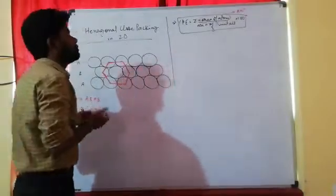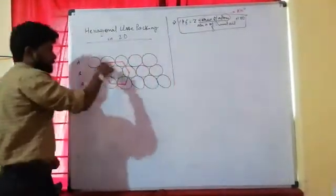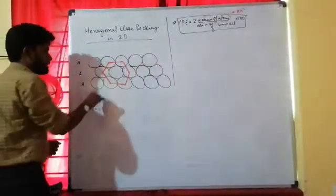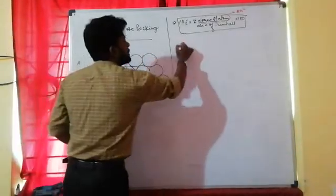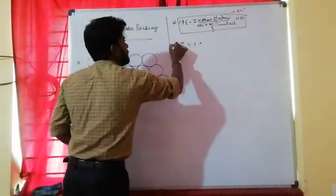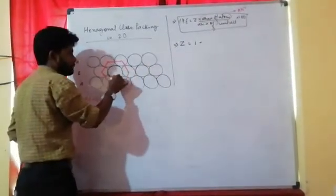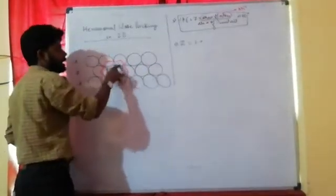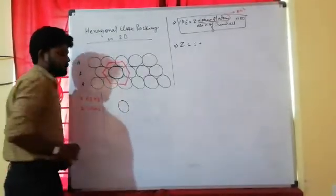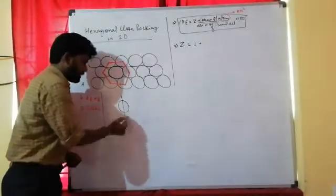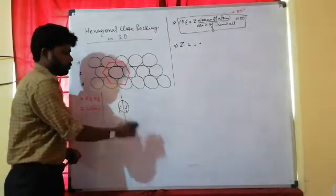Area of the unit cell and Z. As we can see, there is 1 complete atom at the center of the unit cell. These edge portions are divided into 2 sections — each portion is 1/2 and the other portion is 1/2.